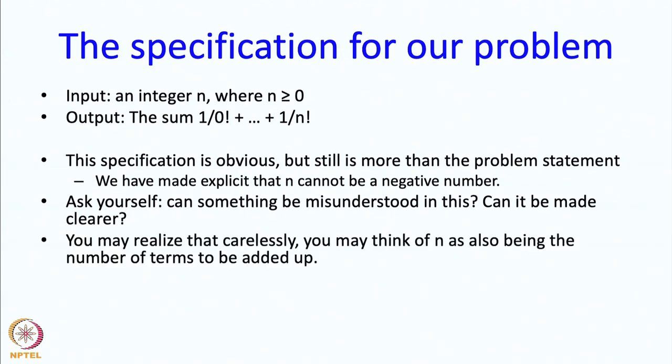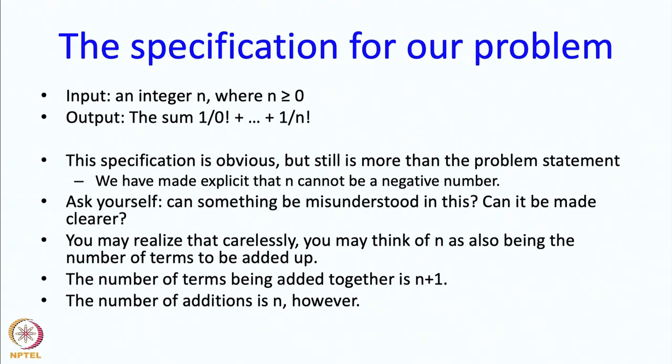So, in this case you may realize that if you are careless, you may think of n as also being the number of terms to be added up but that is not correct. 1 upon 0 factorial might be regarded as the 0th term, then 1 upon 1 factorial is the first term, 1 over n factorial is the nth term. So, there really are n plus 1 terms to be added up, however, the number of additions you perform is actually n. So n does have some significance but not as the number of terms.